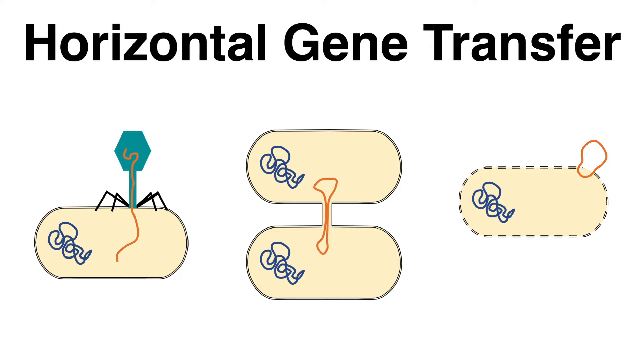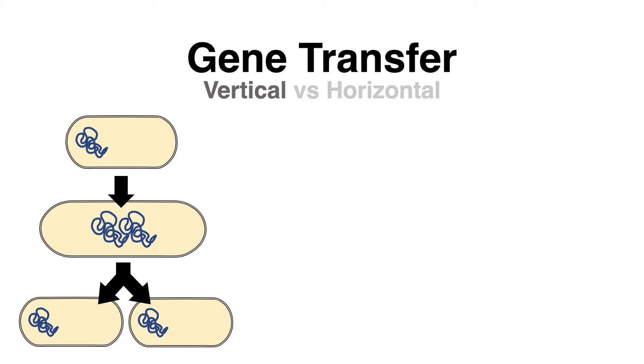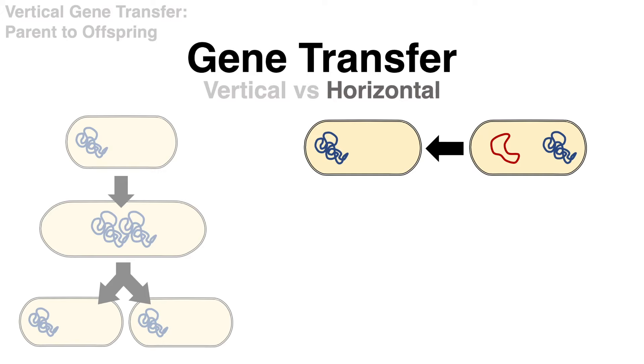Gene transfer in general can be vertical or horizontal. We speak about vertical gene transfer when the genetic material is transmitted from parent to offspring, either by sexual or asexual reproduction. Horizontal gene transfer is gene transfer between two already existing organisms. The donor transfers genetic material to a recipient organism that is not the donor's offspring.